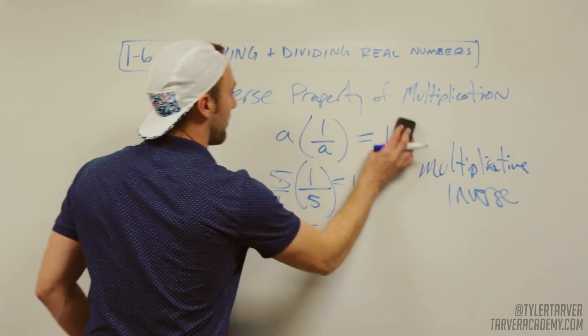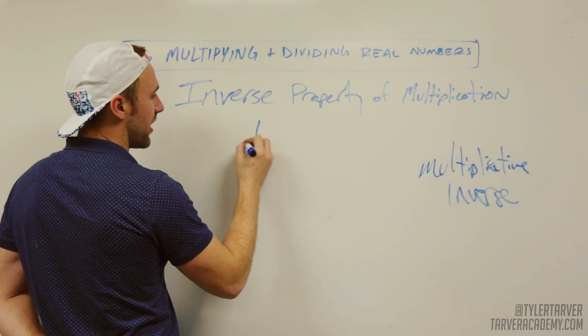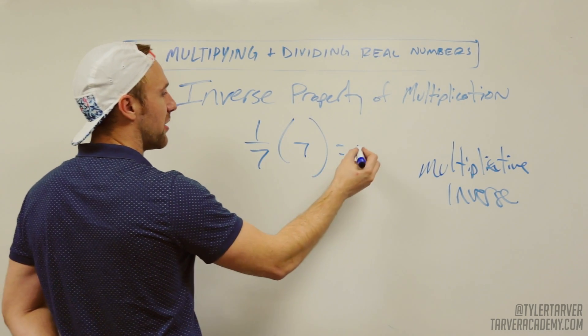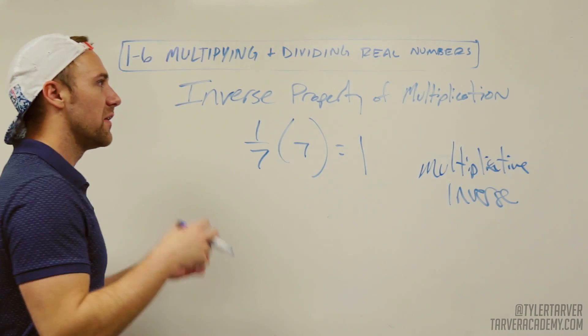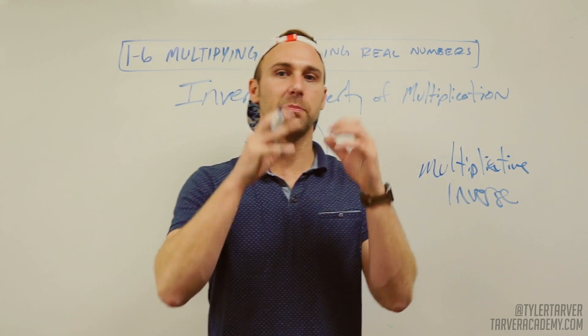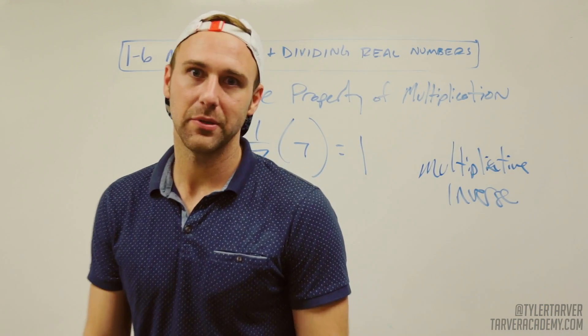The simple way of remembering it. What's the multiplicative inverse of one over seven? Guess what? Seven. Because when you multiply them, they equal one. The multiplicative inverse is always whatever that number can be multiplied by to equal one. That's what's up.